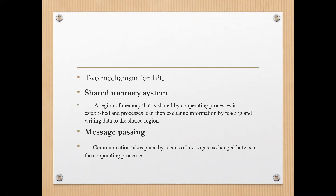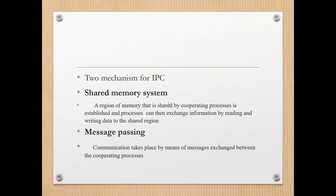Whenever one process wants to communicate with another process, it will write the information it wants to share into the shared memory region. The other process can then simply enter that memory location and read the data that was written by the first process, and then understand what was being communicated. That is what happens in the shared memory model.